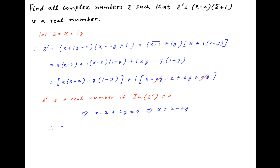Therefore, all complex numbers z such that z dash is a real number are given by 2 minus 2y plus iy, where y is a real number. And this is the required answer.